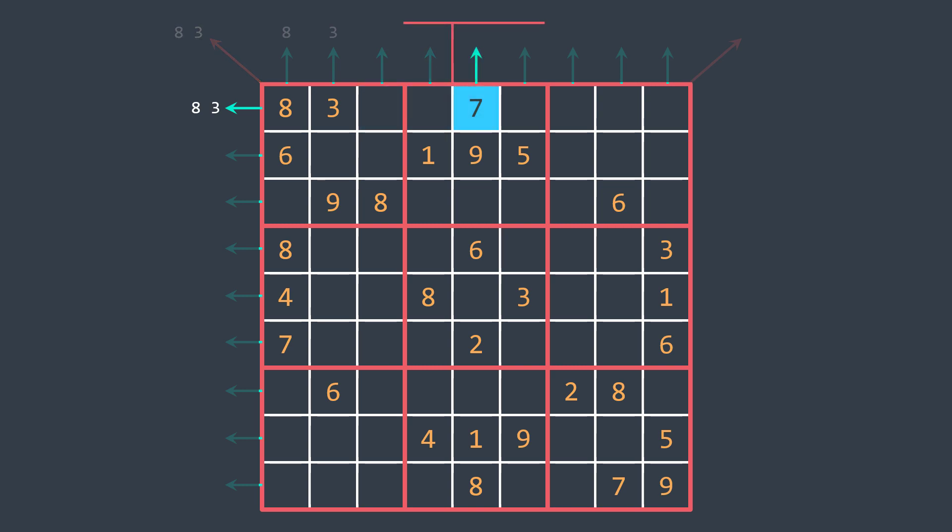Next cell, 7, row 0, column 4, square 1, we just add. Then empty, empty, empty and empty. Then 6, row 1, column 0, square 0, we add. Then empty, empty, then 1, we add. Then 9, we add, and 5, we add. Then empty, empty, empty and empty.